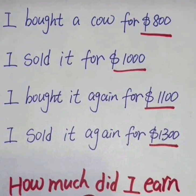The next way to look at it is to add the total amount of money you spent to buy the car — $800 plus $1,100 — giving you $1,900 total spent. Then add the total amount you sold it for: $1,000 plus $1,300, giving you $2,300. When you take away $1,900 from $2,300, that gives you $400.